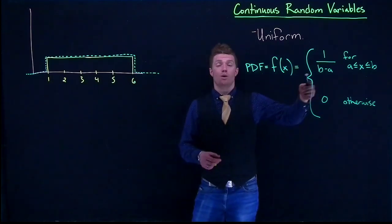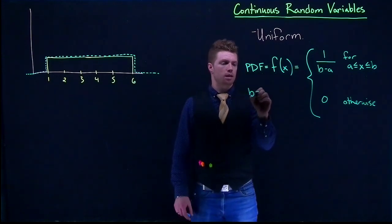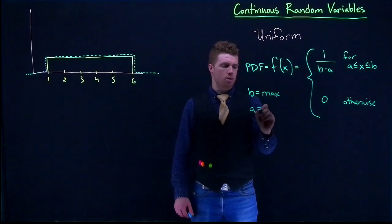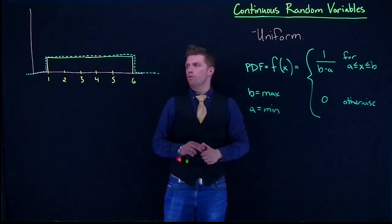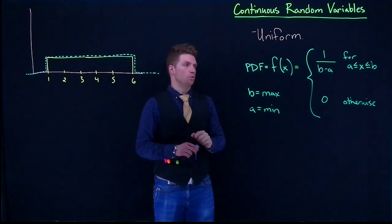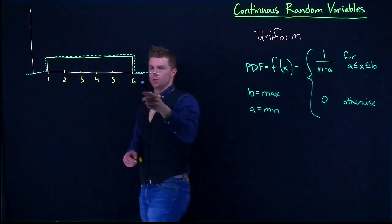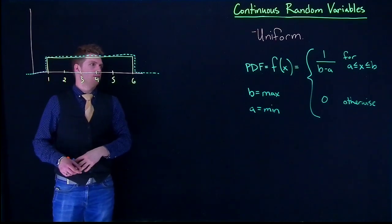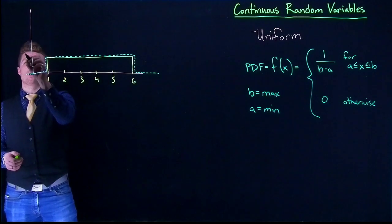So B and A, we've got to know what B and A is. Remember that B equals our max and A equals our min. So if we were looking for what the height of this particular uniform distribution was, we'd go to 1 divided by B minus A. So we've got B of 6, A of 1. So we've got 1 divided by 5 is our height.